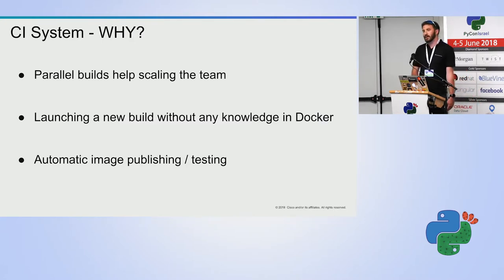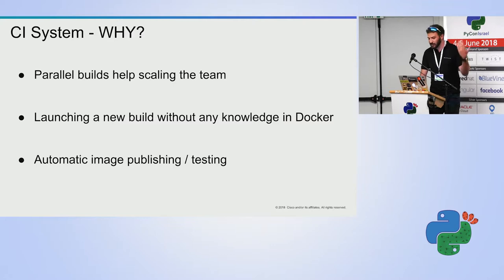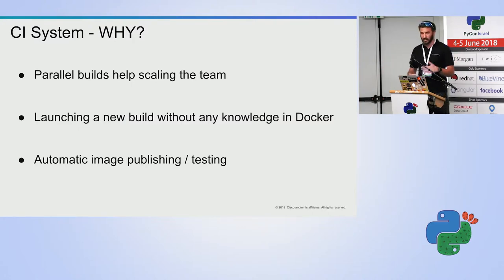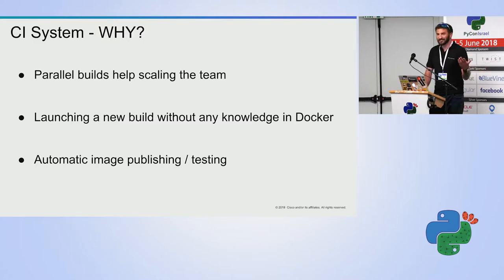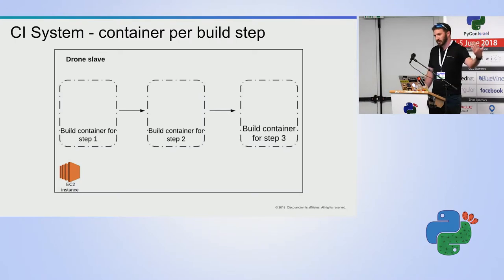With this system, each developer doesn't need to wait for others — the first and second developer won't wait until the first build ends. One of our concerns was how a developer with no Docker experience could deploy code as fast as possible, iteratively. Using our CI, the developer doesn't need to know anything about Docker. Let's talk about how drone CI, Jenkins, and Travis work in the context of Docker.